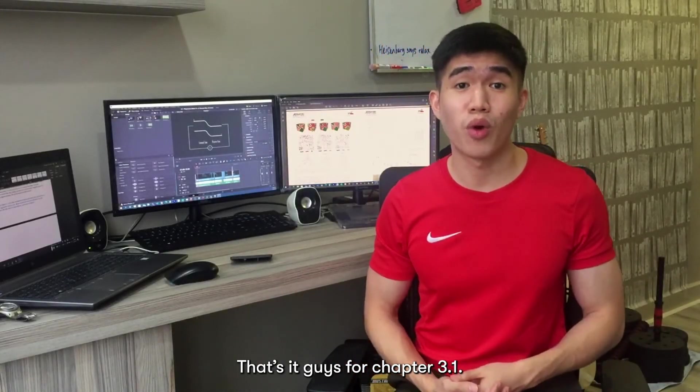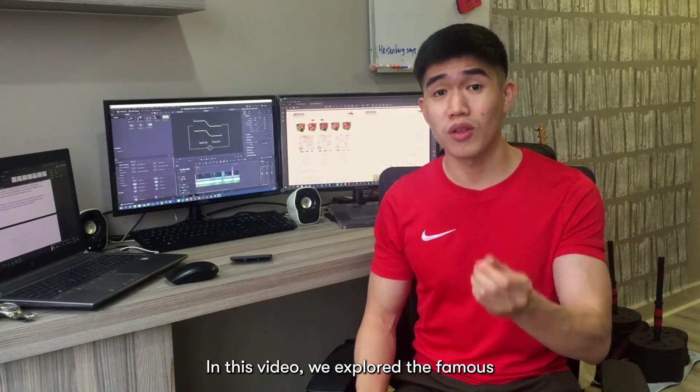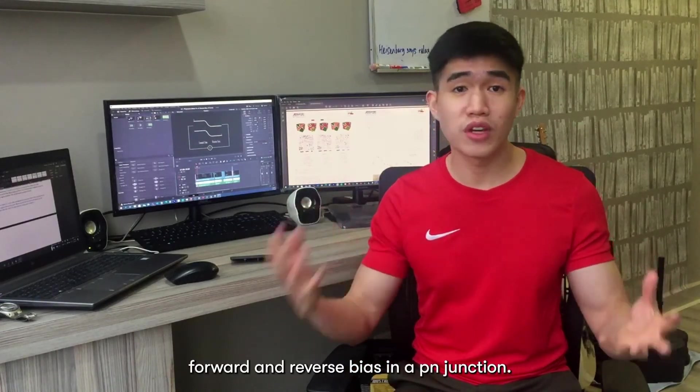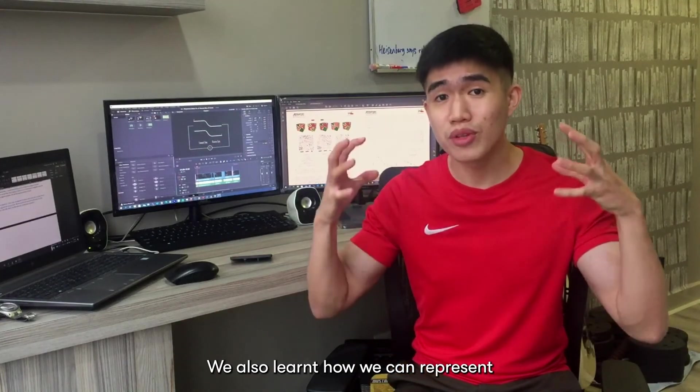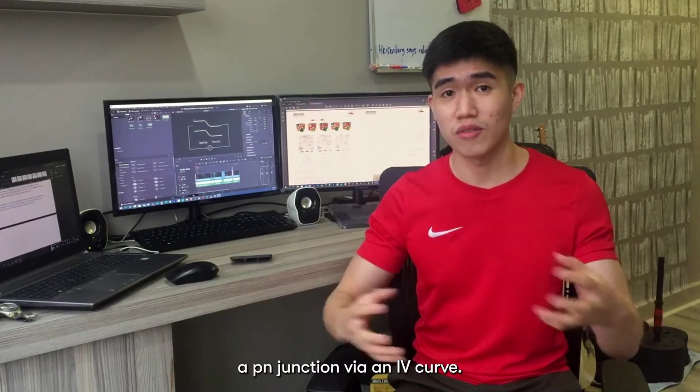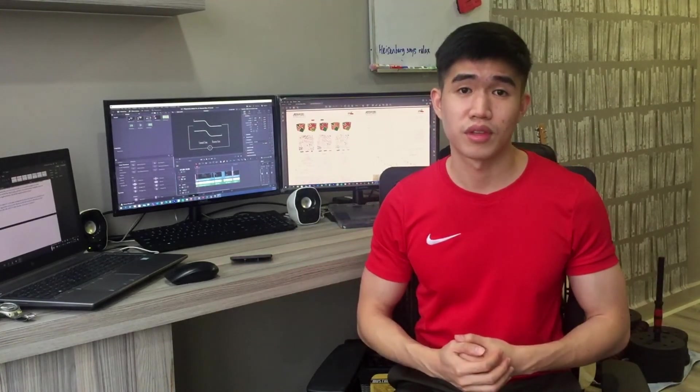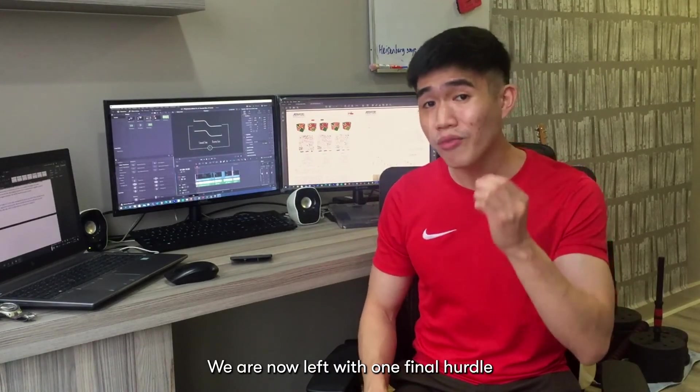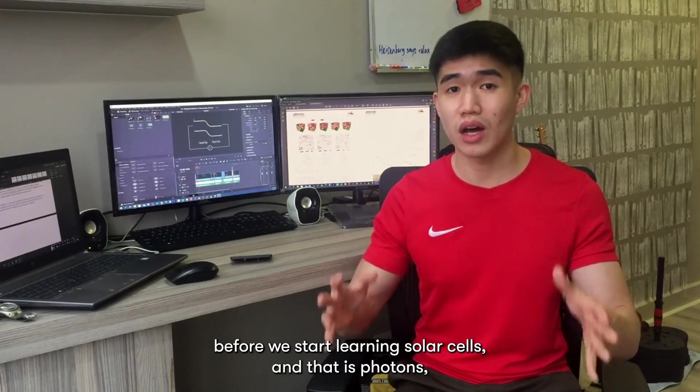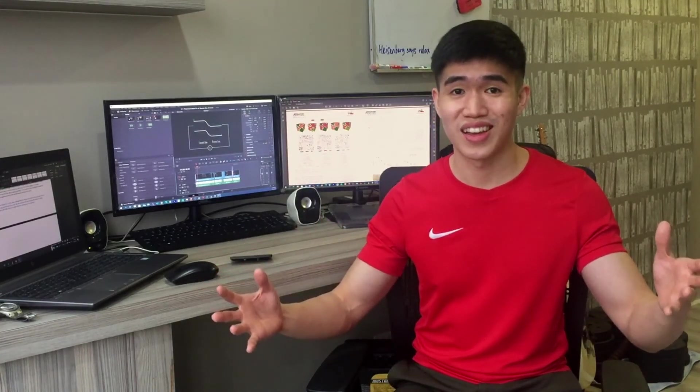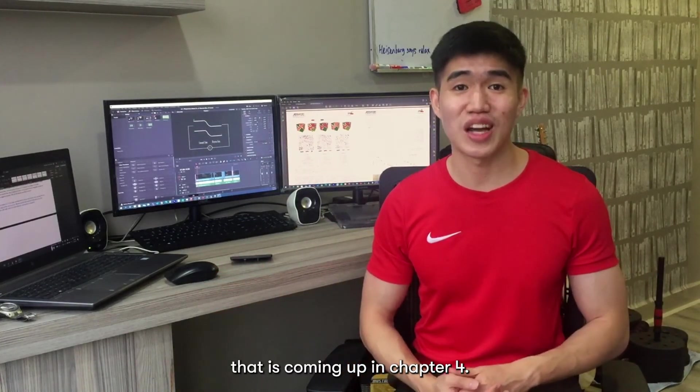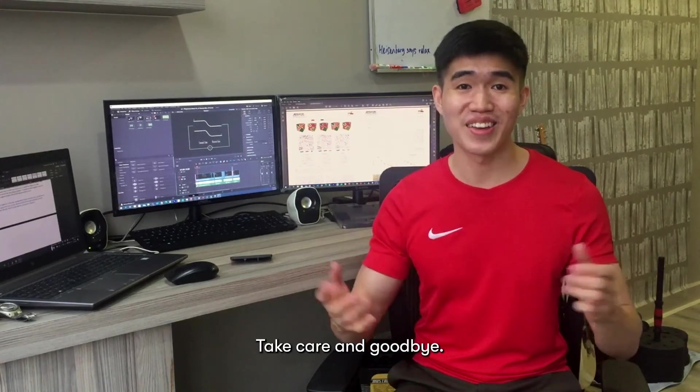That's it guys for chapter 3.1. In this video, we explored the famous forward and reverse bias in a PN junction. We also learned how we can represent a PN junction via an IV curve. We are now left with one final hurdle before we start learning solar cells. And that is photons. That is coming up next in chapter 4. Take care and goodbye.